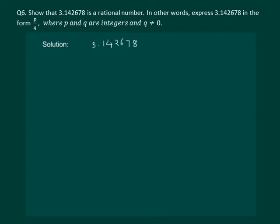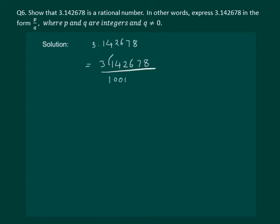We know that a decimal number can be written as a fraction. We remove the decimal and put that many zeros in the denominator — 1, 2, 3, 4, 5, 6 zeros. So we have written this decimal number in the form p by q where p and q both are integers and q is not equal to 0.